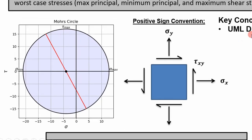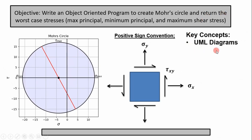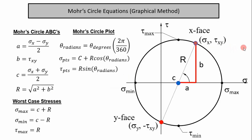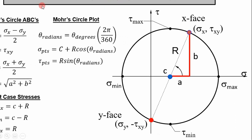The key concepts we're going to cover include UML diagrams — that's the starting point of developing an object-oriented program. You need to start there; it makes the process a whole lot easier. The equations we're applying are the Mohr's Circle equations for the graphical method, which is simpler than the stress transformation equations because you can see the geometry and relate it to get the values you want.